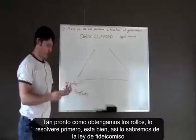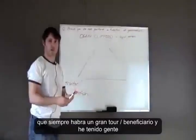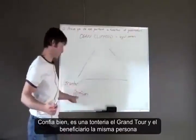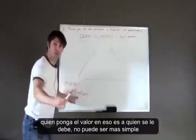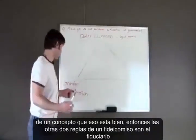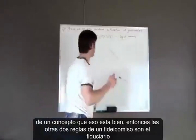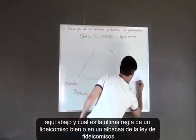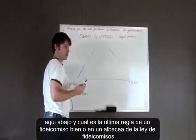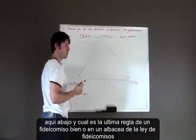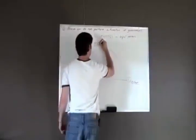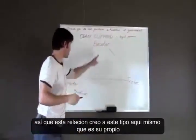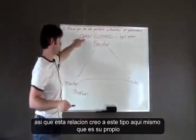From trust law, there's always going to be a grantor slash beneficiary. I've had people argue that the grantor and the beneficiary are two different parts of a trust — that's nonsense. The grantor and the beneficiary are the same person. Whoever puts the value in, that's who it's owed to. The other two roles of a trust are the trustee and the executor. This relationship created a new legal person who is his own entity.